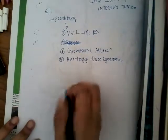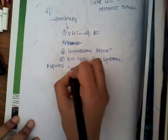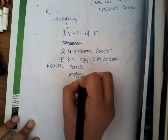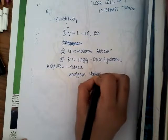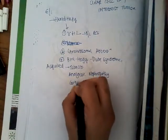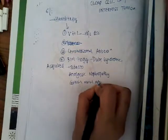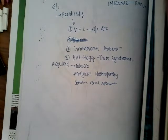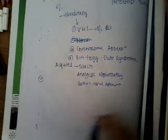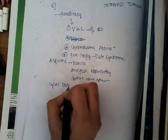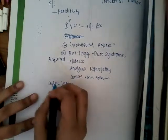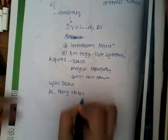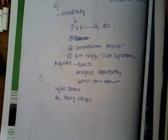Acquired causes include tobacco smoking or analgesic nephropathy, which can progress to renal cell carcinoma. There can also be cortical renal adenoma, which can progress to renal cell carcinoma. Sometimes cystic diseases of the kidney increase the risk, and exposure to arsenic and heavy metals can also cause renal cell carcinoma.